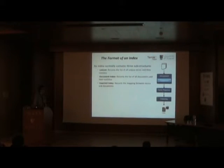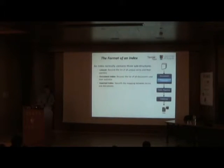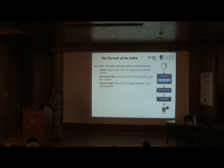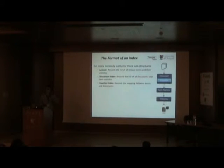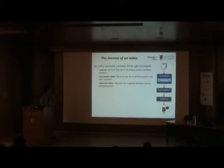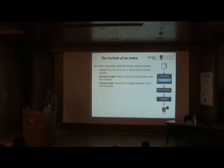The particular data structures we use within our index include the lexicon, which records a list of all unique terms and their statistics — their frequency across the collection. This helps us calculate the IDF component or the background in a language model. We also need the document index, recording a list of all documents and their statistics, such as the length of the document. This is important for document length normalisation, which is an important component of most weighting models.